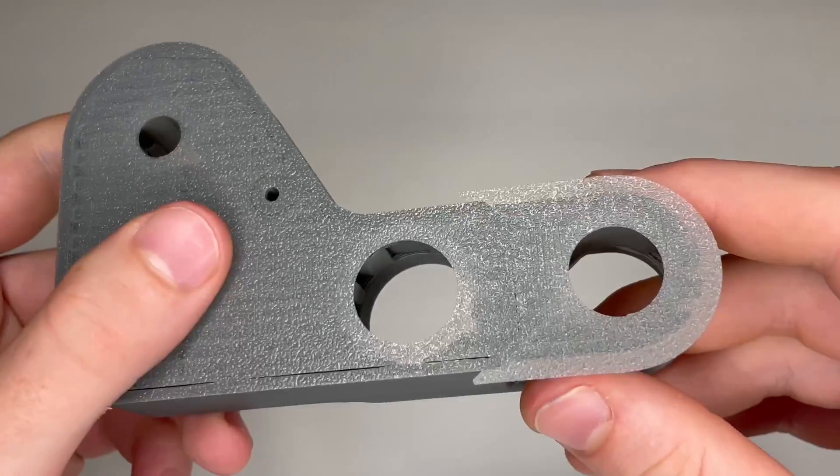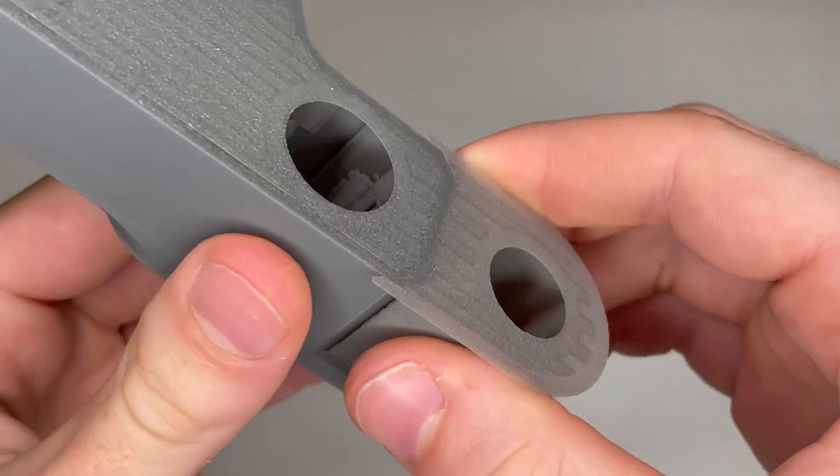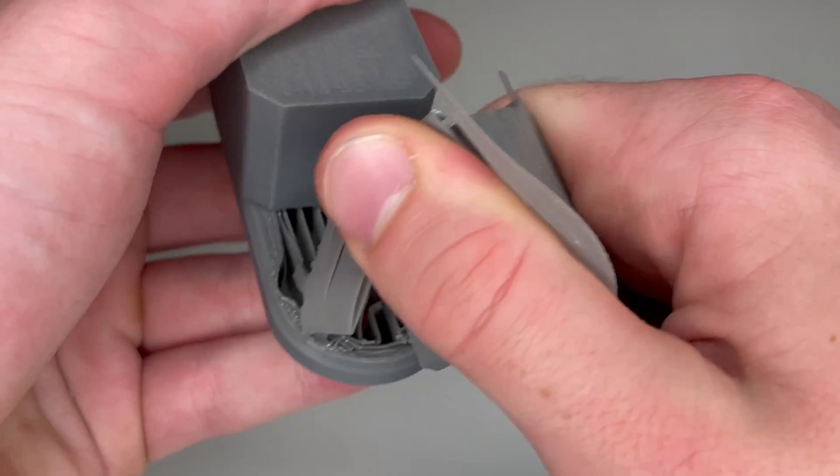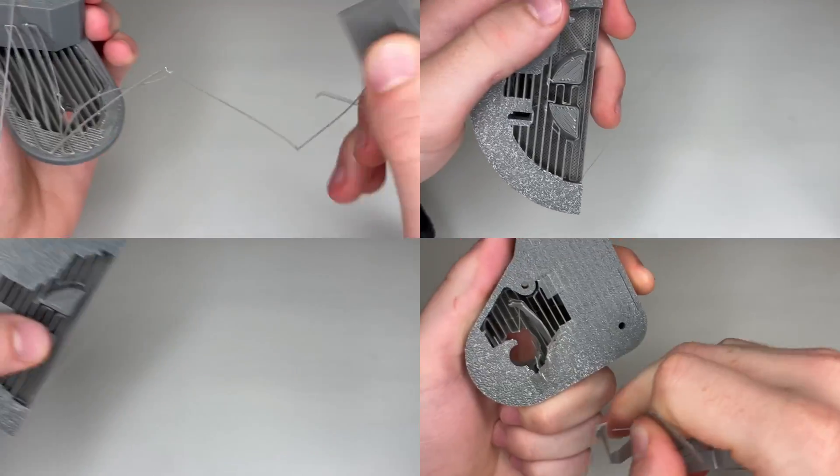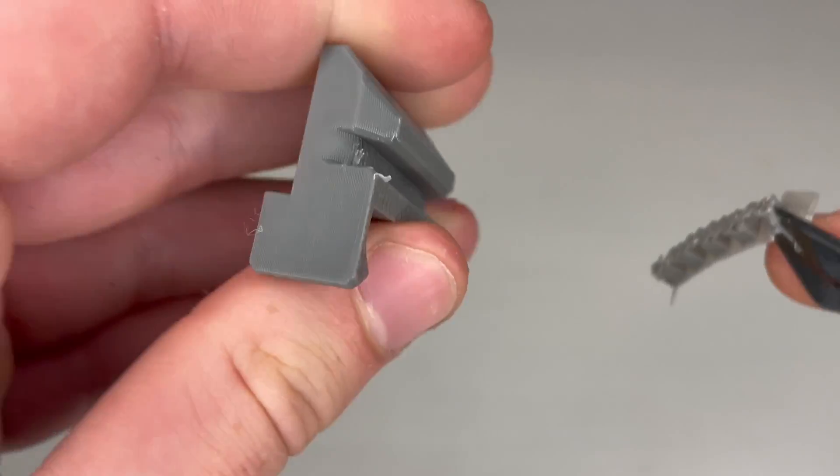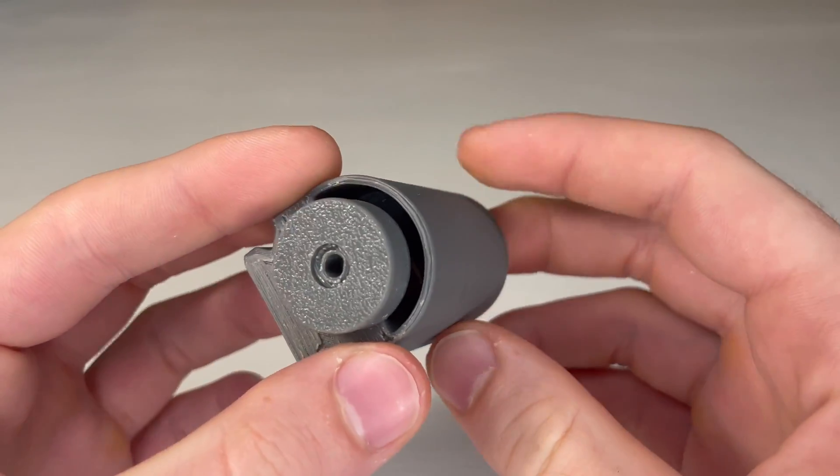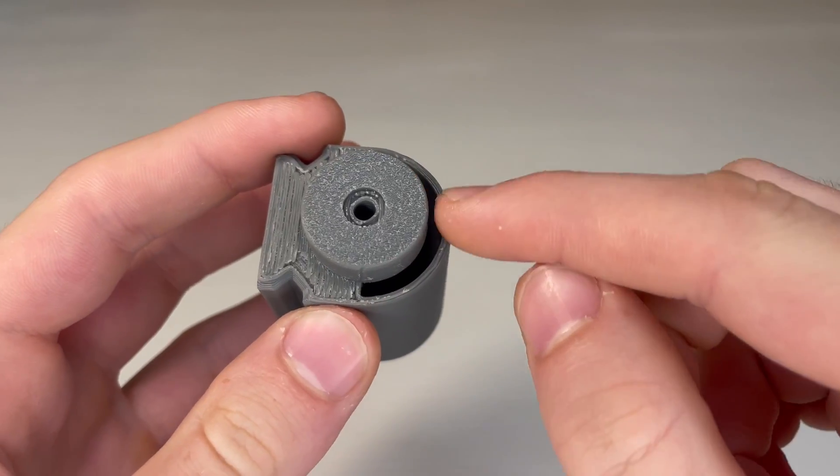After you print all the parts there are unfortunately quite a bit of supports to remove. The first part we'll be working with is the gripper piece. And first we'll insert the micro servo wire into this slot.